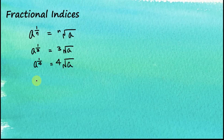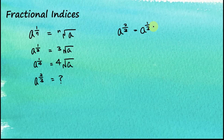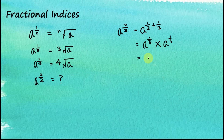Now, how about a to the power of 2 over 3? Well, a to the power of 2 over 3 can be written as a to the power of 1 over 3 plus 1 over 3. We learned that a to the power of 1 over 3 plus 1 over 3 is equal to a to the power of 1 over 3 times a to the power of 1 over 3. This is a number multiplied by itself 2 times, and therefore this is a to the power of 1 over 3, squared. Now, we learned that a to the power of 1 over 3 is equal to the cube root of a, and therefore we can write this as the cube root of a, squared.